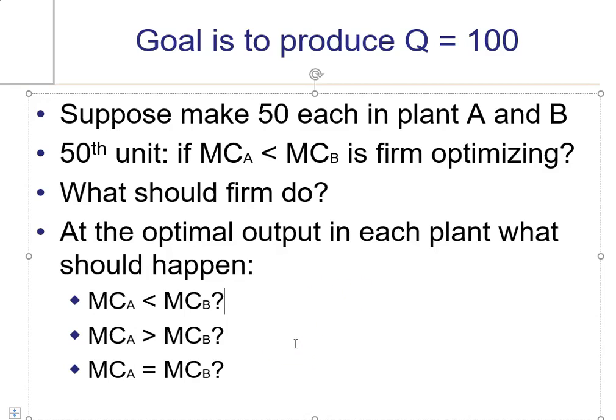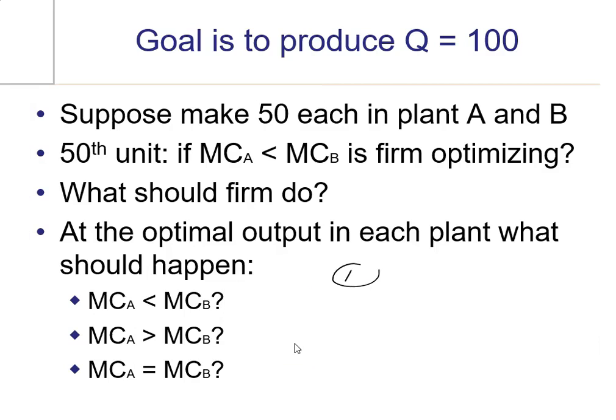So how to solve a question like this then is two steps. Step one, if you're asked how to allocate production among two production plants, you want to set your marginal cost equation in plant A equal to the marginal cost in plant B.